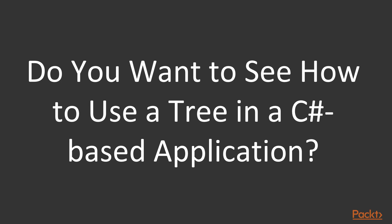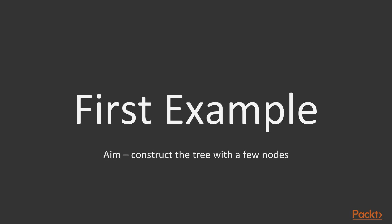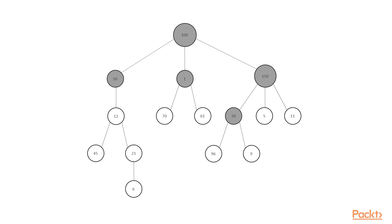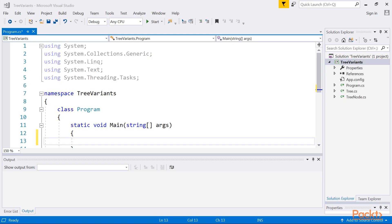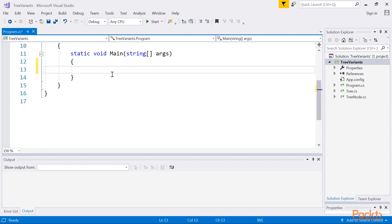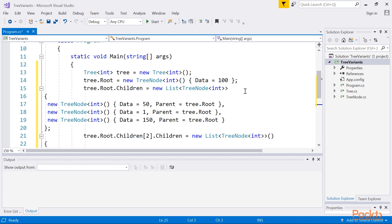Do you want to see how to use a tree in a C# based application? Let's take a look at the first example. The aim is to construct the tree with a few nodes as shown in this diagram. Only the group of nodes with darker backgrounds will be presented in the code; however, it is a good idea to extend this tree by yourself. As you can see, each node stores an integer value, so int will be the type used for both Tree and TreeNode classes. Let's add the next part of the code in the main method in the program class. The code looks quite simple, doesn't it?